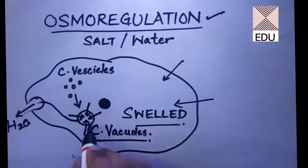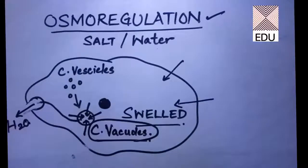So this is performed by contractile vacuoles. So what is the function of contractile vacuoles? They are throwing out the extra water from the body of the amoeba towards outside. So this is the regulation of water.